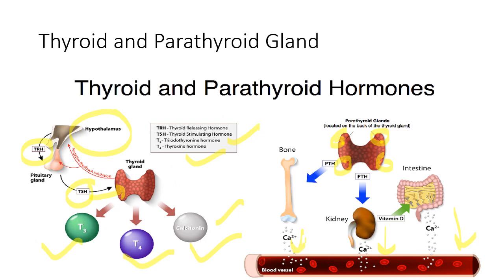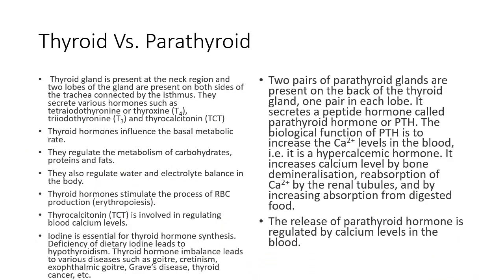Blood vessels are present everywhere in the body, so calcium in the blood must be maintained. The thyroid gland is present in the neck region, has two lobes, and is butterfly-shaped — also called H-shaped. It releases T4, T3, and calcitonin hormones, which function to maintain metabolic rate and regulate carbohydrates, proteins, and fats, as well as balance water.